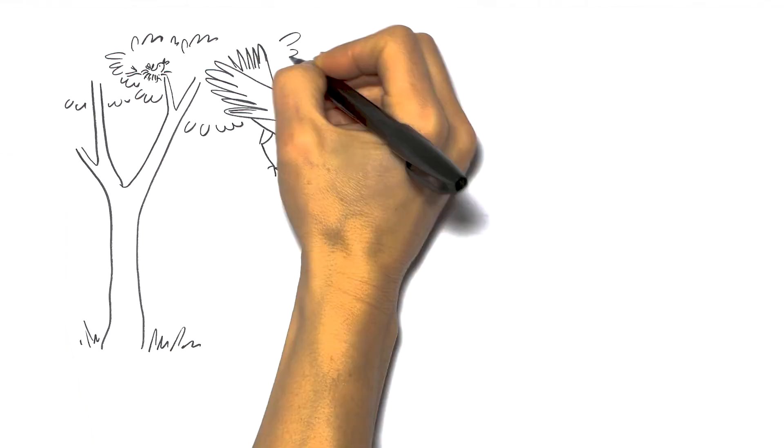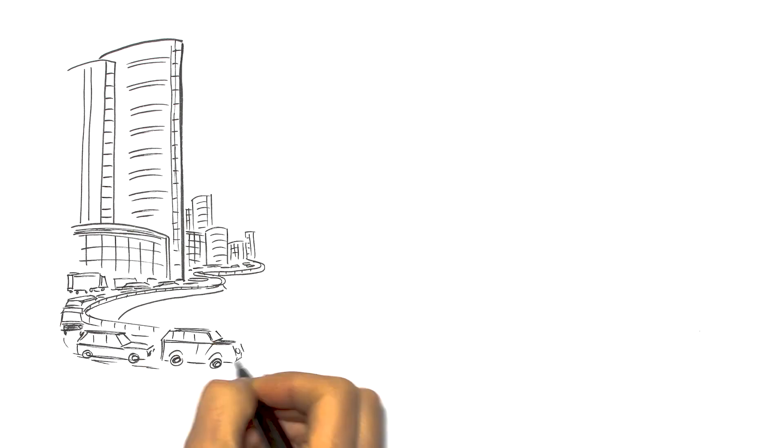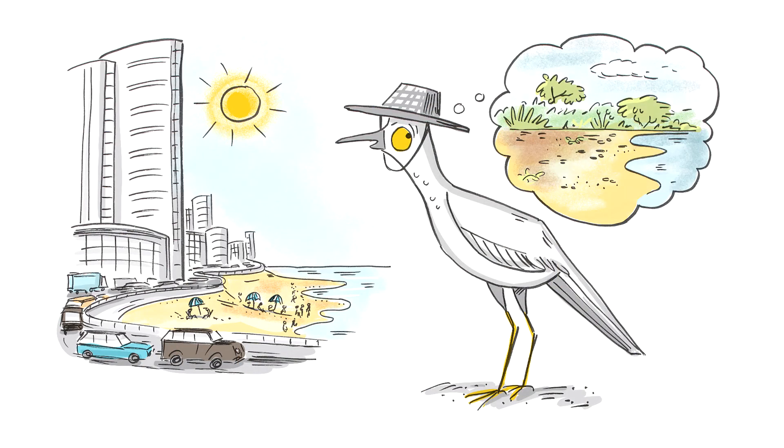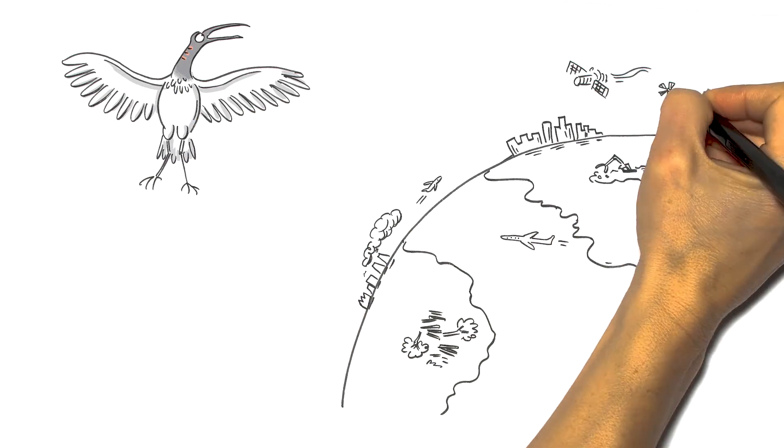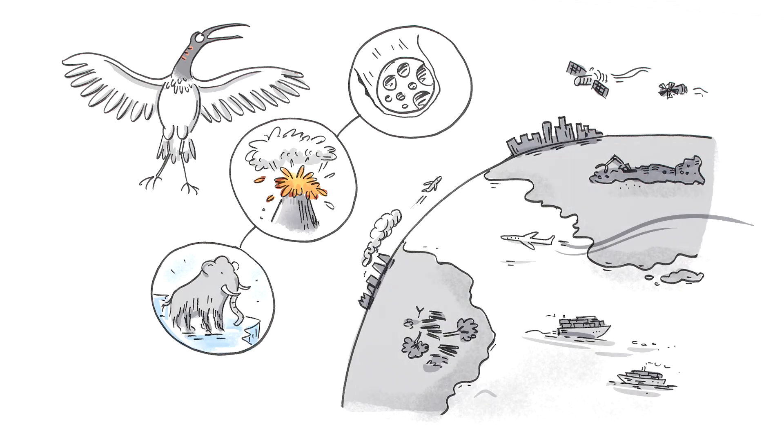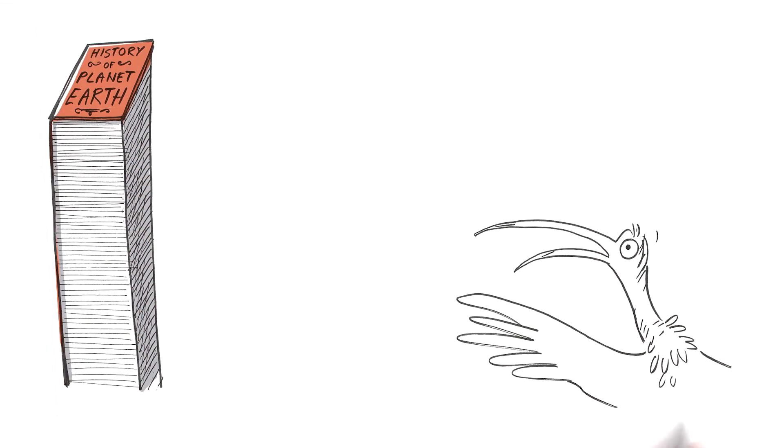You can't blame us for getting a bit territorial from time to time. Or changing our holiday plans because the seasons and the seasides aren't what they used to be. Human beings are doing just as much to shape the planet as any ice age, volcano or meteorite has in the past. Yep, humans are definitely the main characters of this chapter.